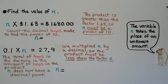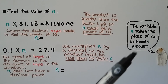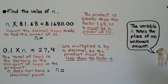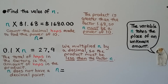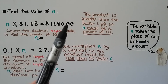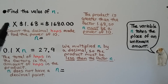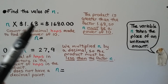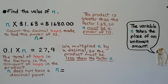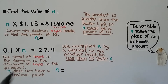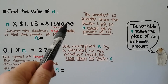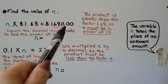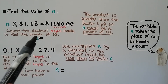Here we need to find the value of n. Remember, n is a variable, and a variable is a letter of the alphabet that takes the place of an unknown amount — no different than an empty square or a blank space. n, some amount, times one dollar sixty-eight cents is equal to one thousand six hundred eighty dollars. The product is greater than the factor, so n must be a power of ten that made the decimal point move to the right. We can count the decimal hops made to find the power of ten. It was in between the one and the six for the factor, but now it's over here — in between the one and the six it went one, two, three hops. That means n must be ten to the third power.